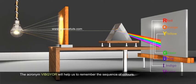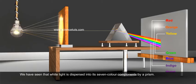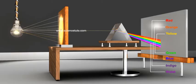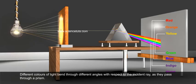We have seen that white light is dispersed into its seven colour components by a prism. Why do we get these colours? Different colours of light bend through different angles with respect to the incident ray as they pass through a prism.